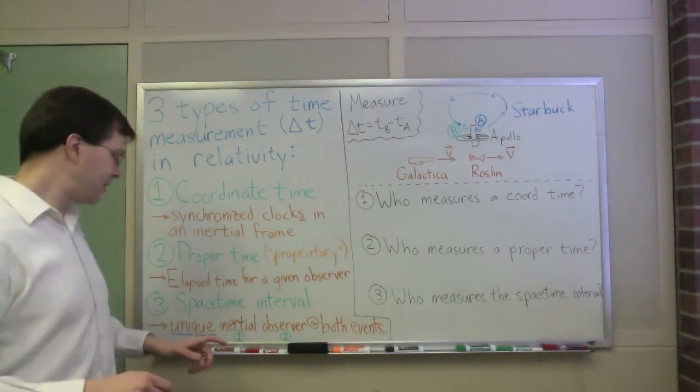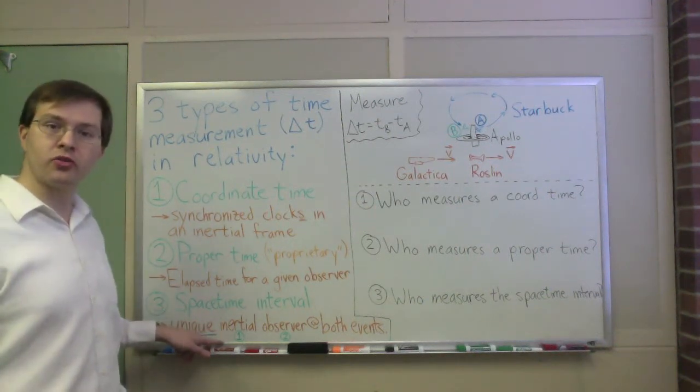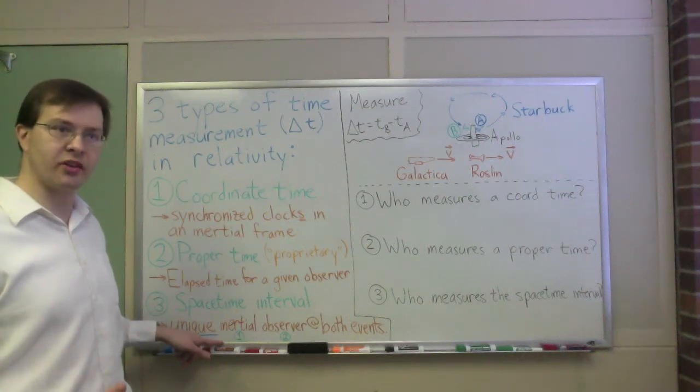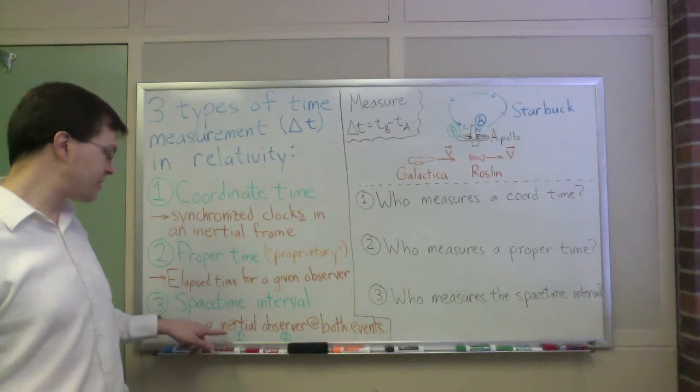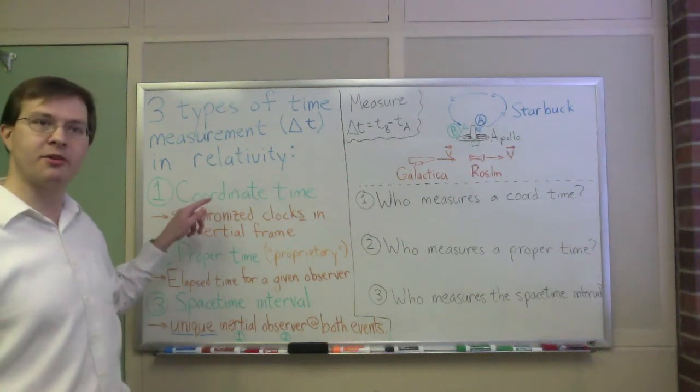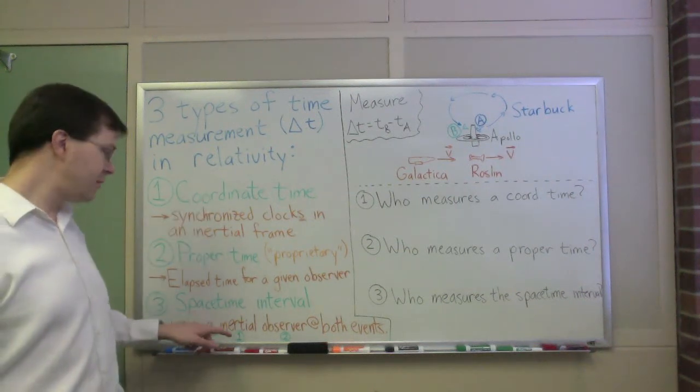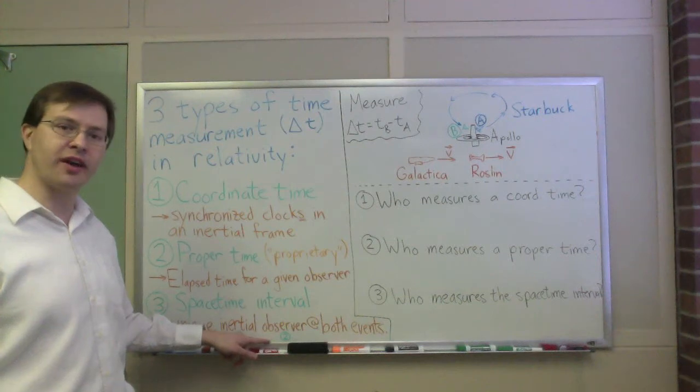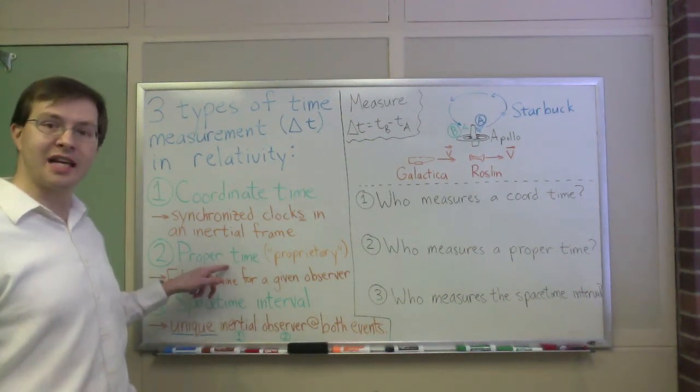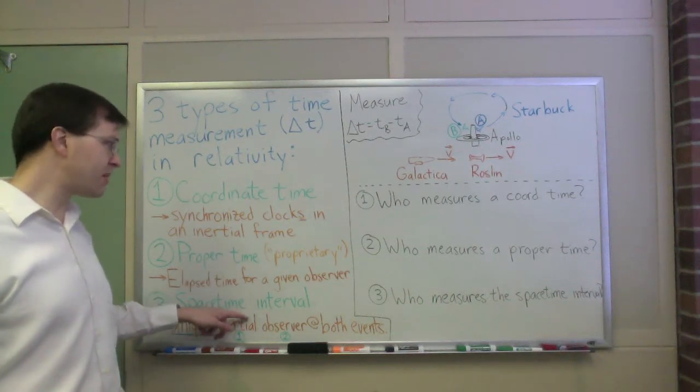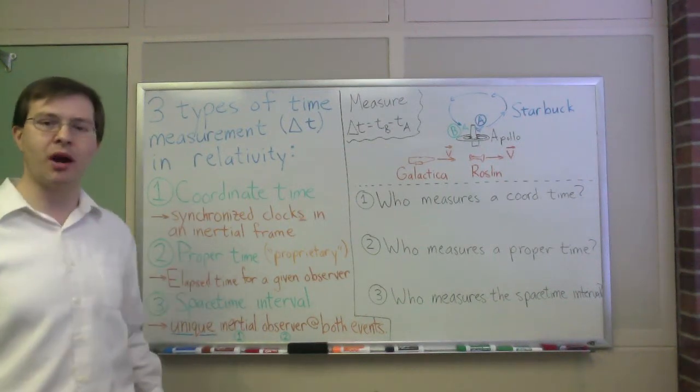This is an important point because this is an inertial observer who doesn't experience any motion, who doesn't feel any acceleration, they're just sitting still from their perspective. This inertial observer means that space-time interval is a type of coordinate time. It's one example of coordinate time. Because it's a single observer present at both events, that means that it's also an example of proper time. So the space-time interval is both a coordinate time and a proper time.